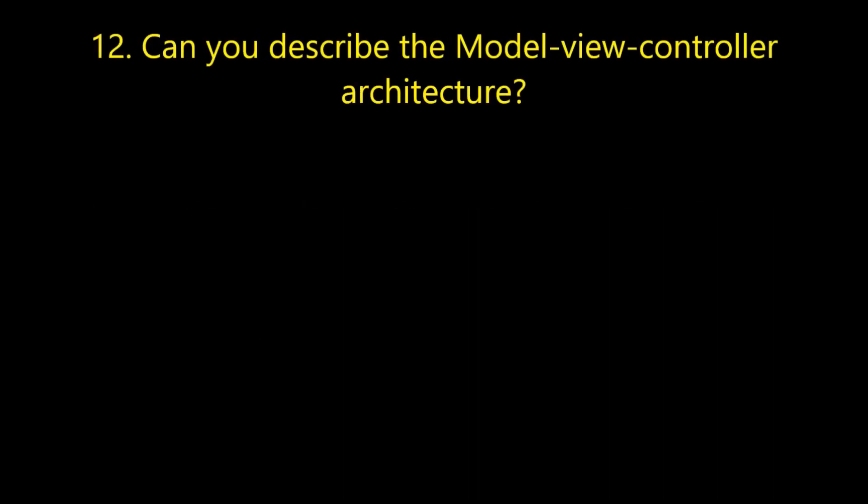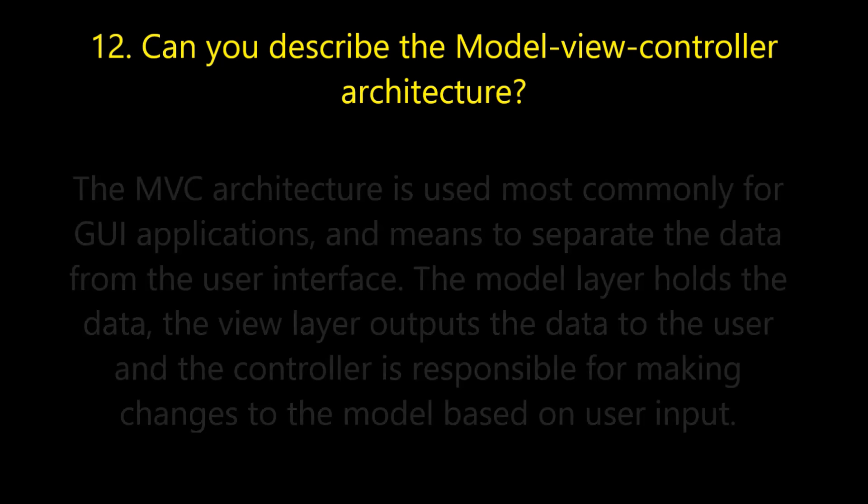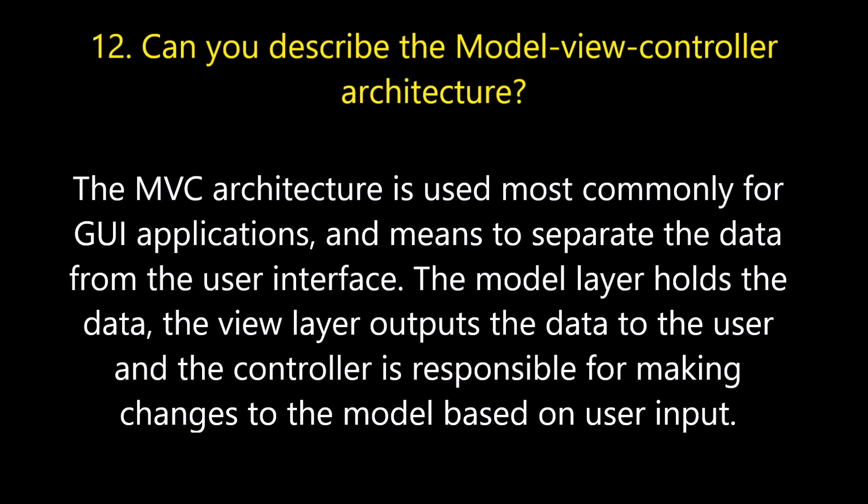Question number twelve: can you describe the Model-View-Controller architecture? The MVC architecture is used most commonly for GUI applications and means to separate the data from the user interface. The model layer holds the data, the view layer outputs the data to the user, and the controller is responsible for making changes to the model based on user input.